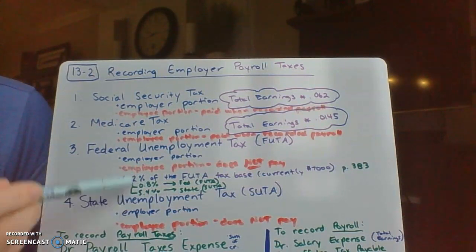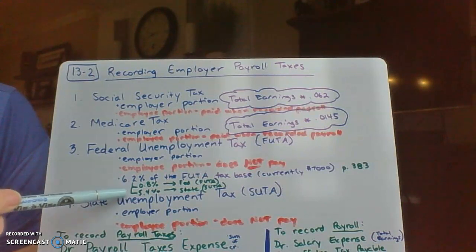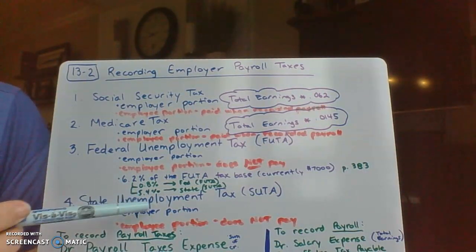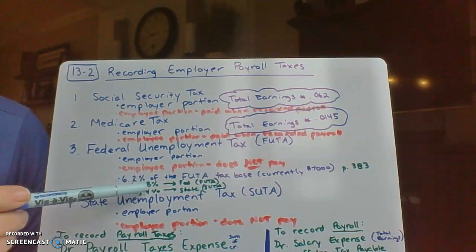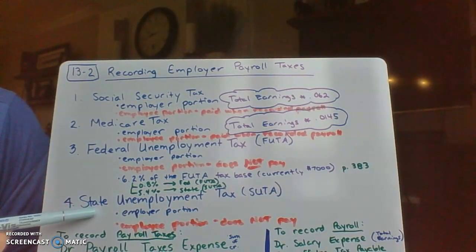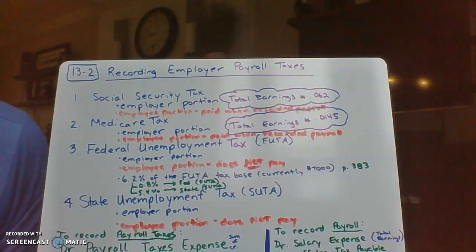We have to split the 6.2% between SUTA and FUTA. Typically, 5.4% of earnings goes to the state unemployment tax office and 0.8% goes to the federal — totaling 6.2%. For example, if a state like Florida used 5%, then 1.2% would go federal to still total 6.2%. More detail is on page 383.